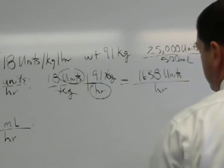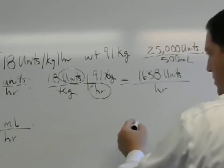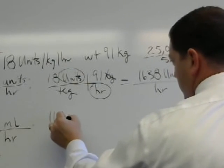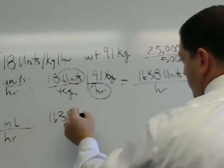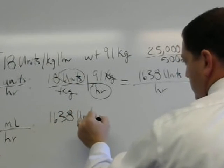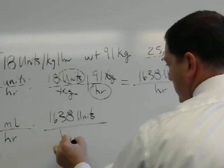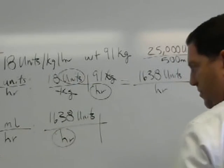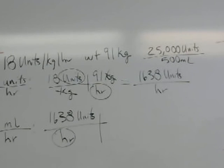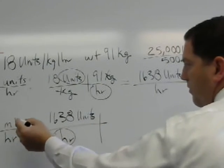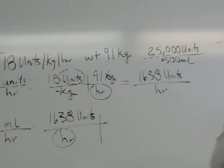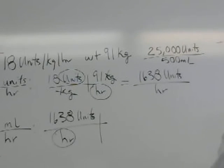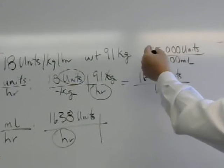So at this point then I know I need hours, and so I'll come over here and I'll take my 1638 units per hour. And now I already have my numerator, my denominator. I'm already settled there, but I have units here and I want mLs. So what can I do to change that?